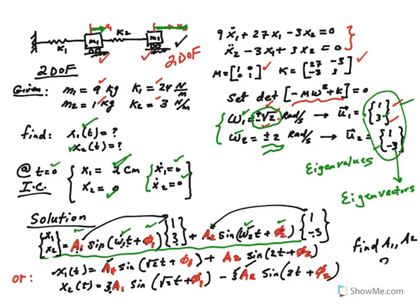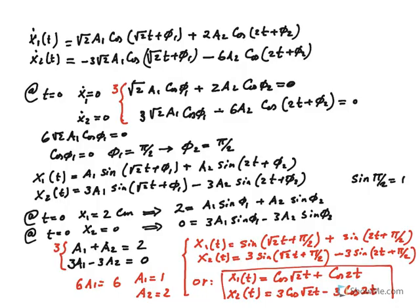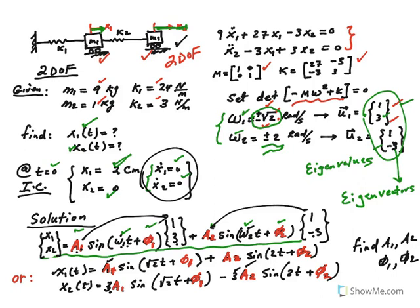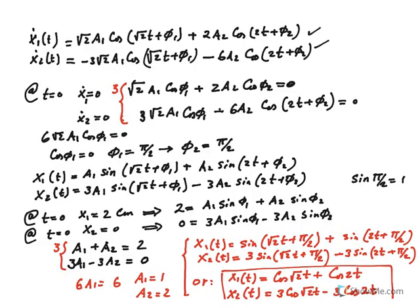Our objective is to find a1, a2, φ1, and φ2 — the unknowns shown in red. To do this I need the velocity equations, so I take the derivative of both displacement equations. The √2 and 2 come to the front as the derivatives of the arguments, and the sine terms become cosine terms. Now I apply the velocity initial conditions: at t = 0, x1-dot = 0 and x2-dot = 0.